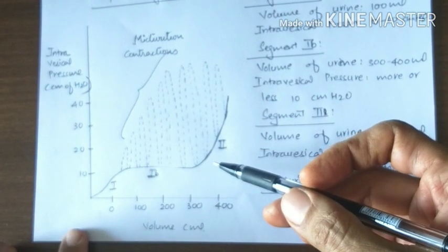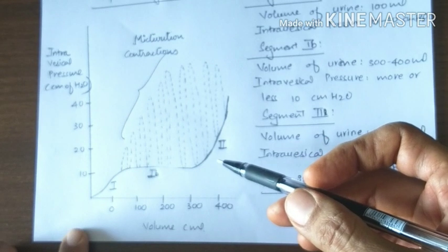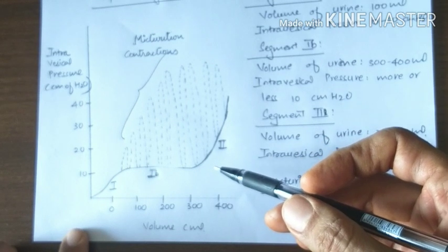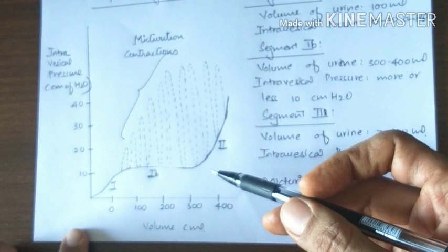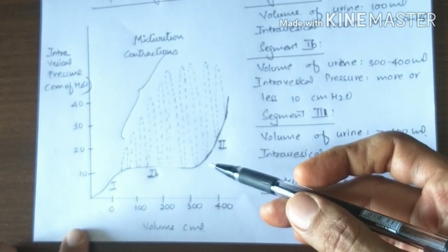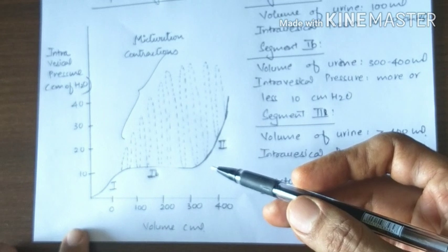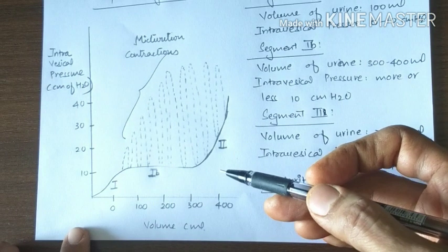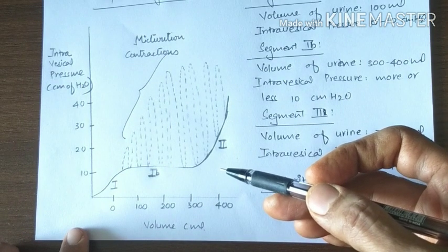Segment 2: When the volume increases more than 400 ml, there is a sharp increase in the pressure. This is because there is no further increase in the radius of the bladder, therefore pressure rises sharply.